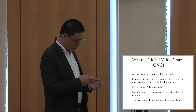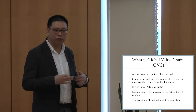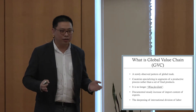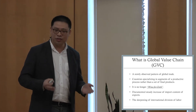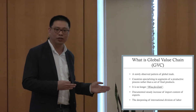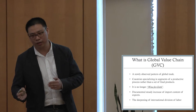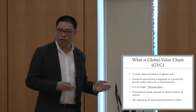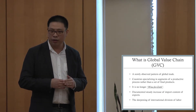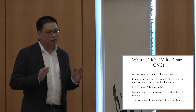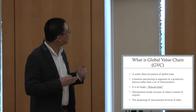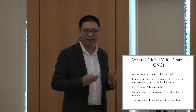When I teach international trade, I always tell my students it's no longer wine for cloth. The first economist to start talking about international trade is David Ricardo, who used the example of Portugal and England trading with each other — Portugal exporting wine to England and England exporting cloth to Portugal. That's the example of trade in final products. But with the existence of global value chains, it's no longer like that.